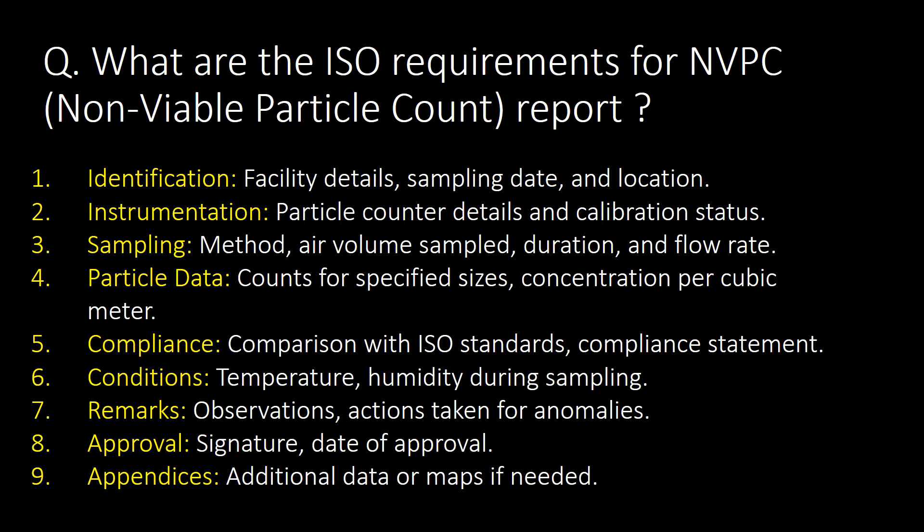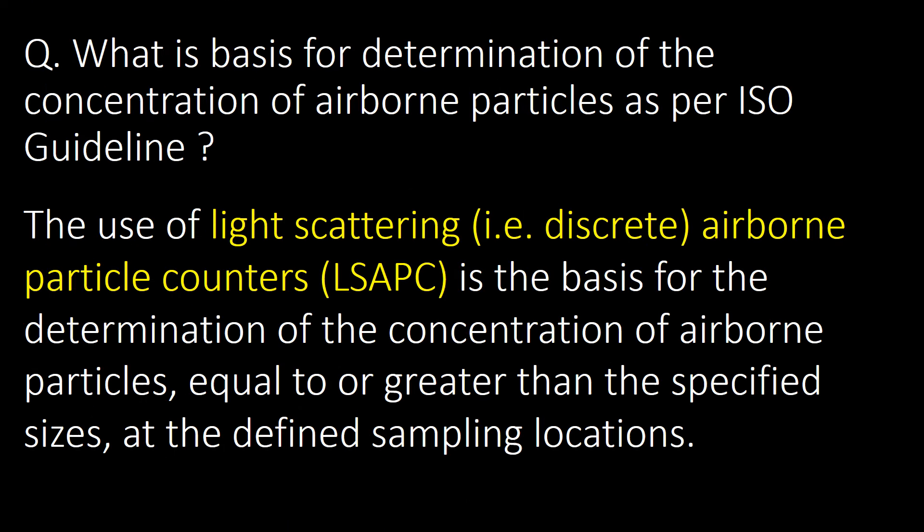What are the ISO requirements for a non-viable particle count (NVPC) report? First: identification. Second: instrumentation, which includes particle counter details and calibration status. Third: sampling, which includes sampling method, air volume sampled, duration, and flow rate. Fourth: particle data, which includes counts for specified sizes and concentration per cubic meter. Fifth: compliance. Sixth: conditions such as temperature and humidity during sampling. Seventh: remarks. Eighth: approval. Ninth: appendices.